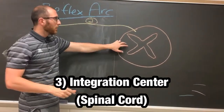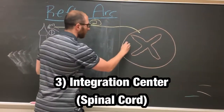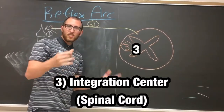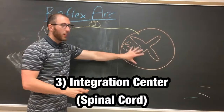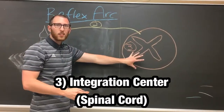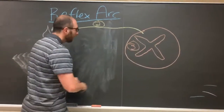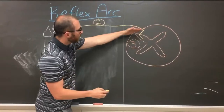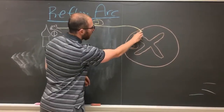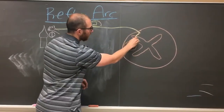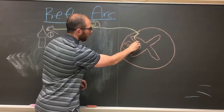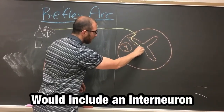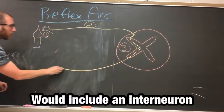The spinal cord is number three — the integration center of a reflex arc — where this signal travels in posteriorly through the dorsal root, through the dorsal horn, synapses, and then travels out.